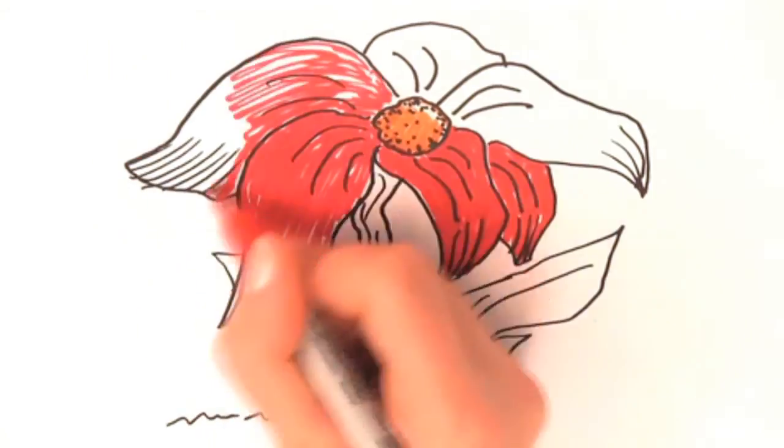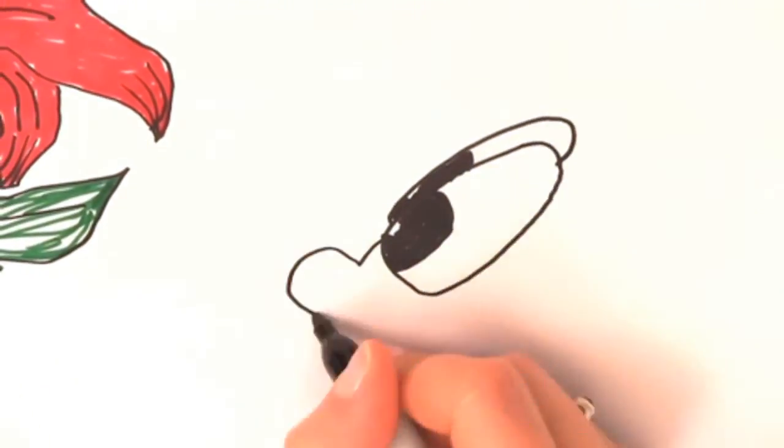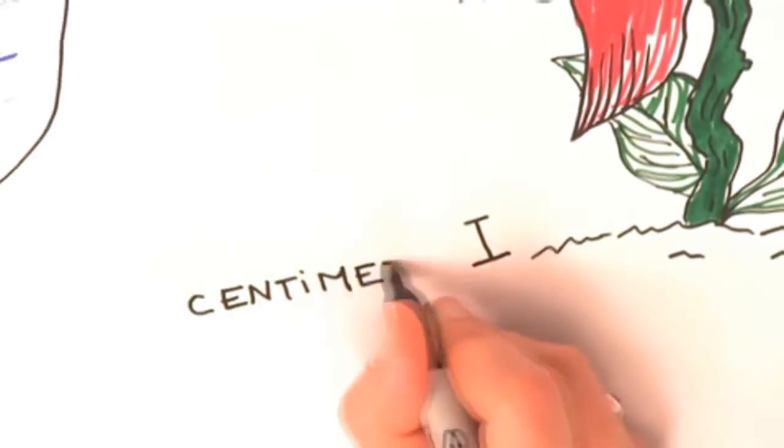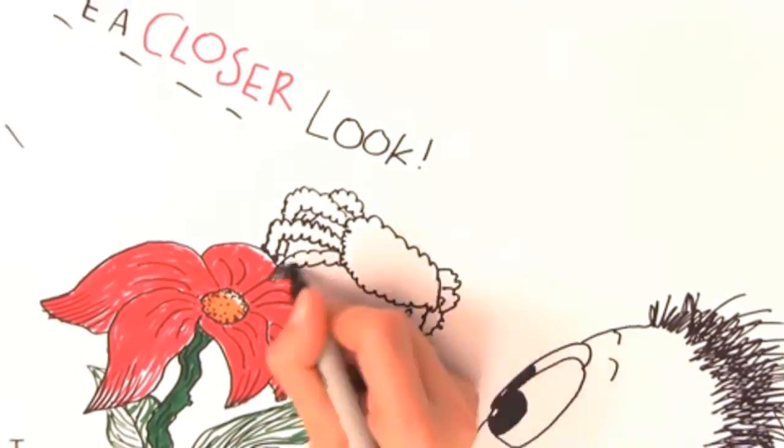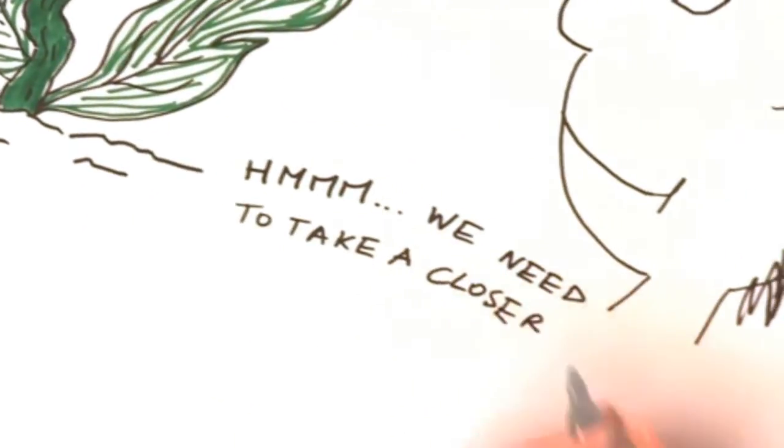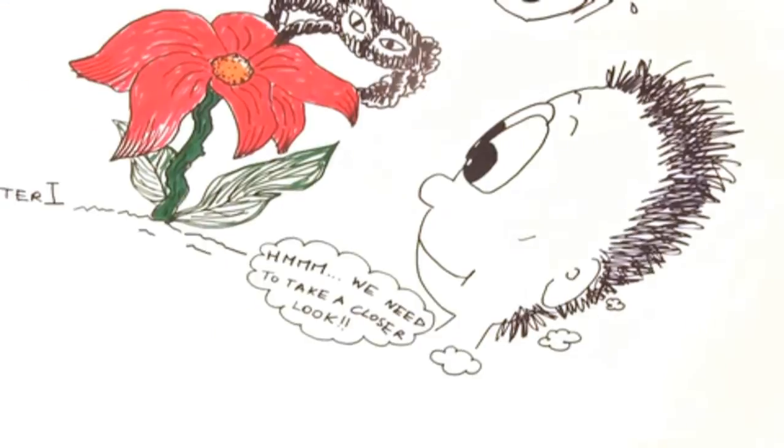Here, at the centimeter level, we can start seeing some of the intricacies of the plant. But to really understand what's happening, we need to go down to the level of the cell.